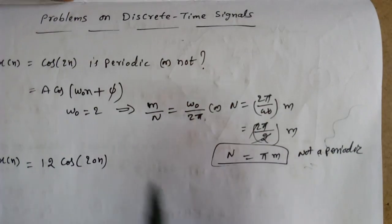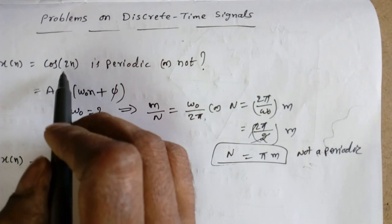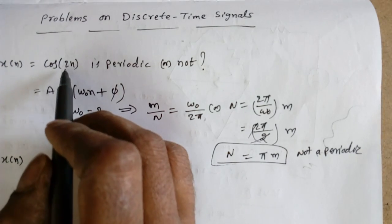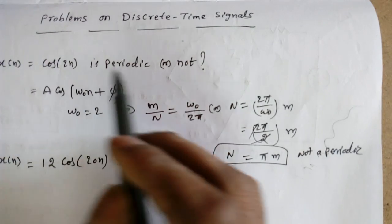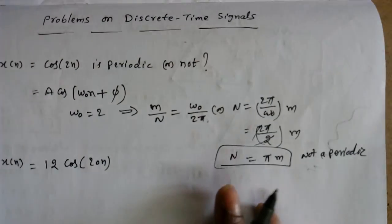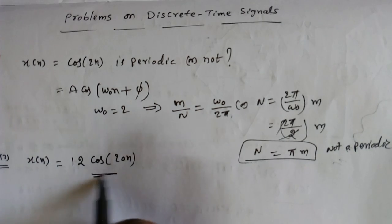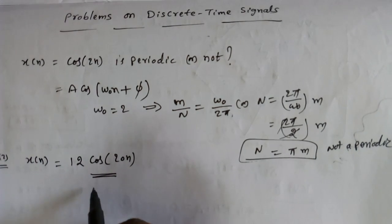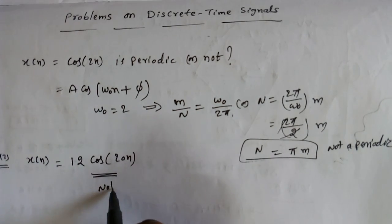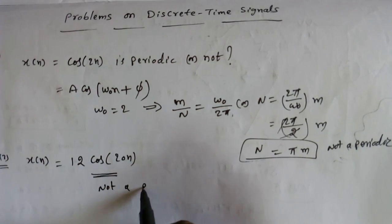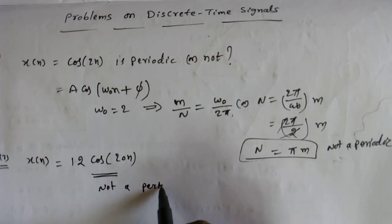So there is a blind rule: if ω₀ does not contain π, it is not periodic. Similarly, you can directly tell this signal is not a periodic signal.